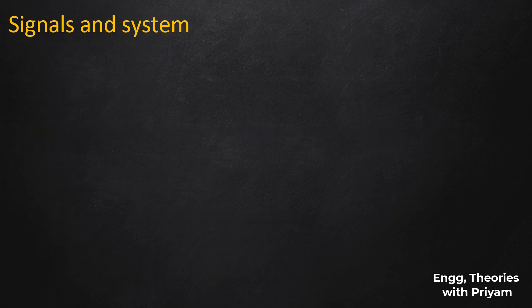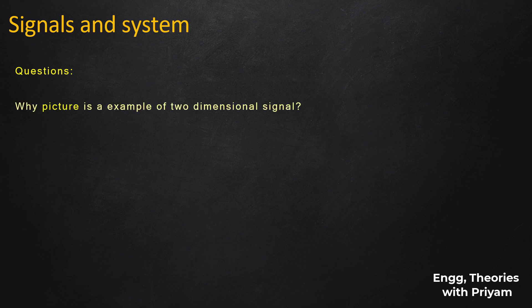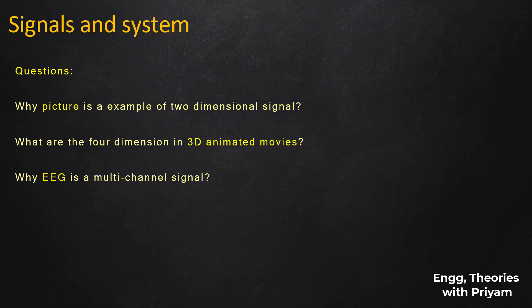Let me ask some questions regarding this lecture: why is a monochromatic picture an example of a two-dimensional signal? What are the four dimensions in 3D animated movies? And why is an EEG signal a multi-channel signal? If you know the answers, post them in the comment section. If you have any doubts, feel free to ask in the comments, and don't forget to hit the subscribe button. See you in the next one.